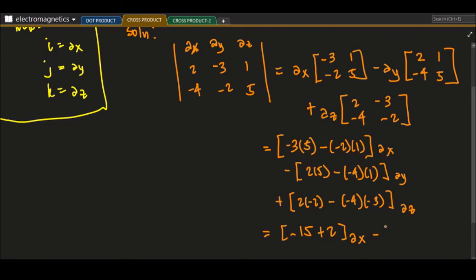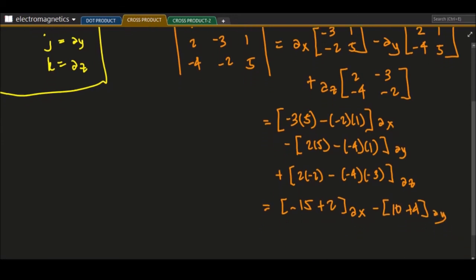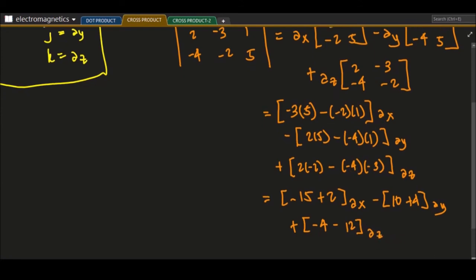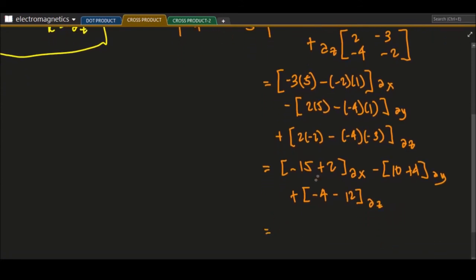Minus 10, that will be plus 4, a sub y. Then we have plus negative 4, positive 12 negative, so minus 12, a sub z.